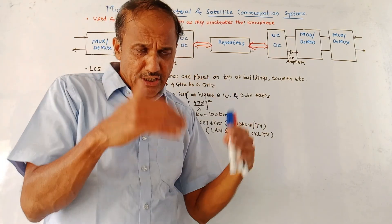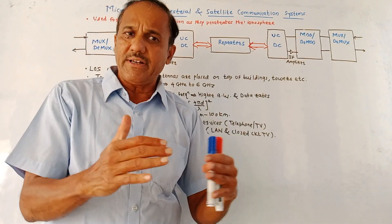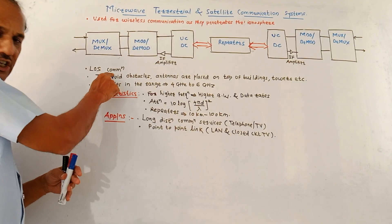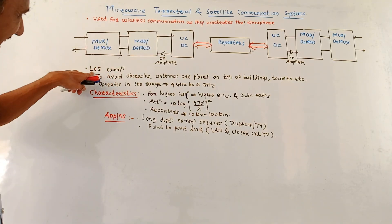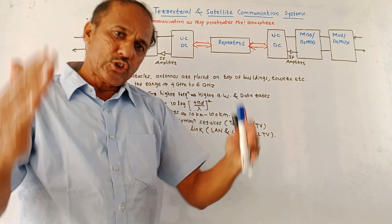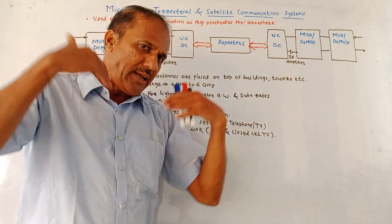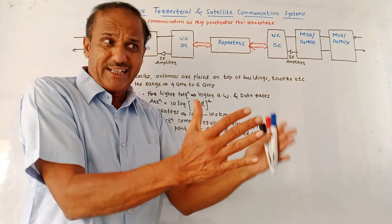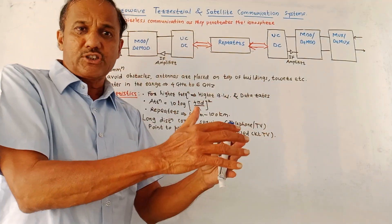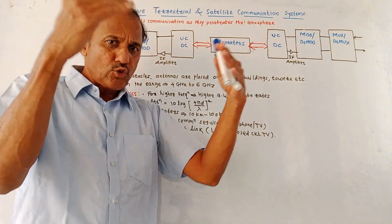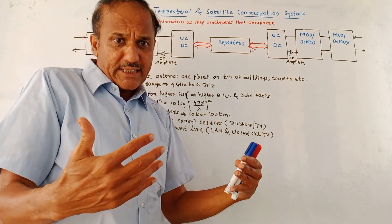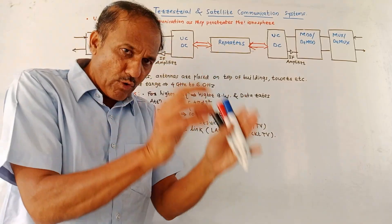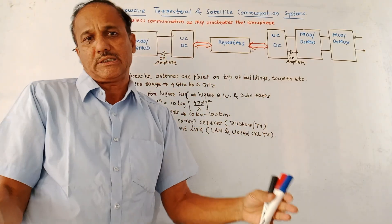This microwave terrestrial communication system has limitations. This system is used for LOS — line of sight — communication. In such cases, there can be many obstacles like buildings, as well as effects due to environmental conditions. So many times, after a particular distance, it is required to use repeater blocks.